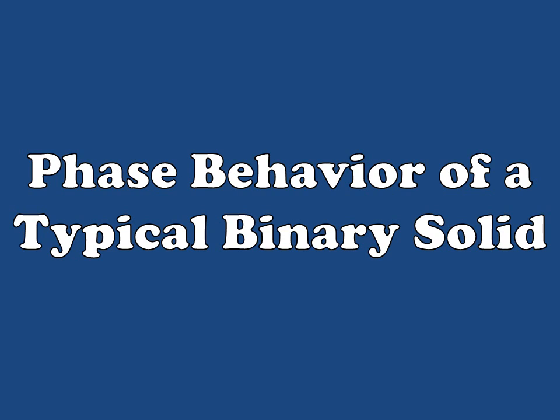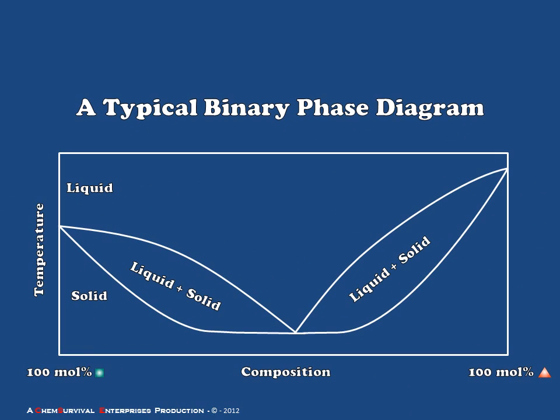Now let's think about how this argument allows us to predict the behavior of a binary mixture of organic crystalline solids. Let's take a look at a typical binary phase diagram. Shown in this slide is an example of one you might see in your textbook or laboratory manual. We're going to erase this diagram and fill it back in piece by piece, thinking carefully about why each feature is there.